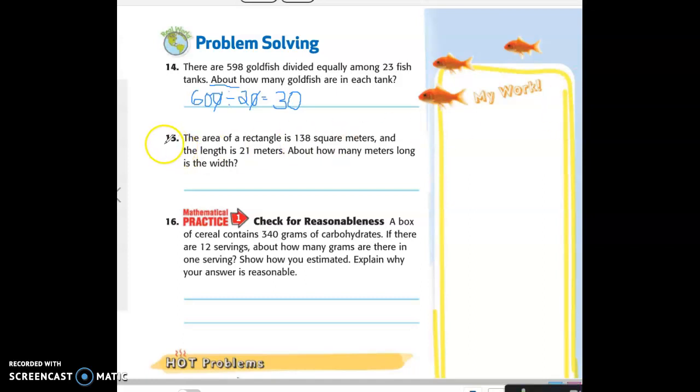Okay, can somebody read number 15 again? Doralee, can you read it for us again? No? Can I? Sure, go ahead. The area of a rectangle is 138 square meters and the length is 21 meters. About how many meters long is the width?